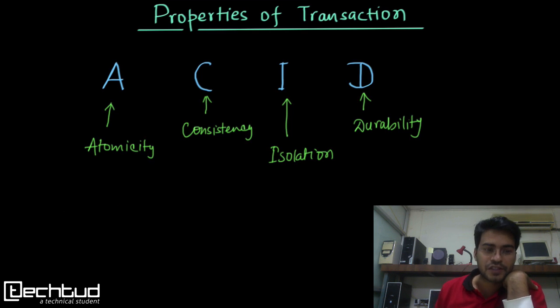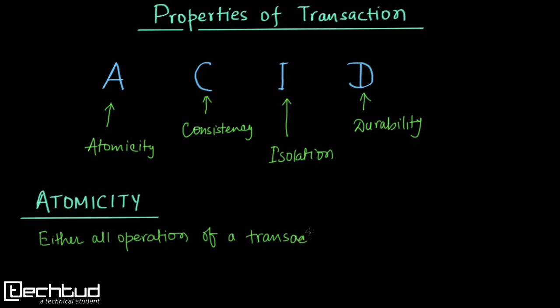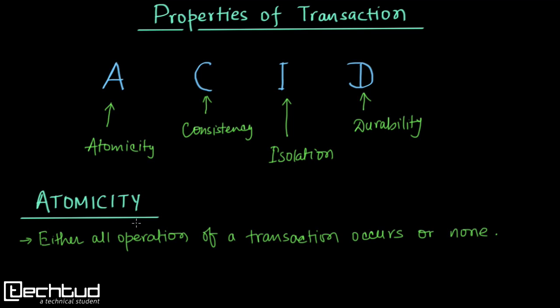Let's start with atomicity. This property says that either all operations of a transaction should occur or none of the operations should occur. As the name suggests, atomicity means the transactions are atomic. Being atomic means either it will be there or it will not be there. There is nothing like half of the transaction, since transactions consist of multiple operations.